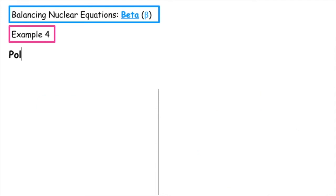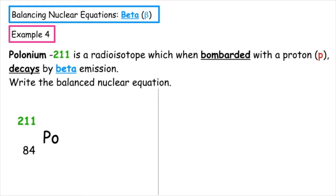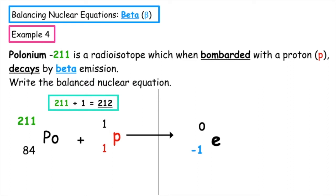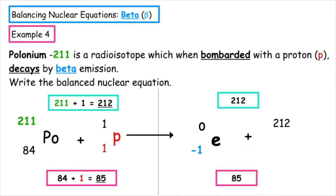Example four: we have polonium-211, which when bombarded with a proton decays by beta emission. Write the balanced nuclear equation. Polonium has atomic number 84 and mass number 211. A proton has a charge of positive one and a mass of one. It releases a beta particle — an electron — with a charge of minus one and a mass of zero. The total mass number on the reactant side is 211 plus one, giving 212, so the product side also has to total 212. Zero plus what gives 212, so the product particle has a mass of 212. On the reactant side, we have 84 plus one, giving a total of 85, so the product side also has to total 85. Minus one plus what gives 85.